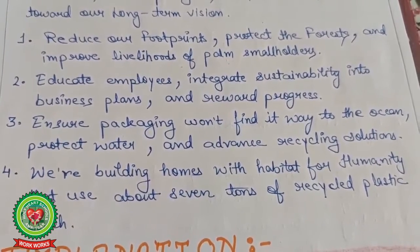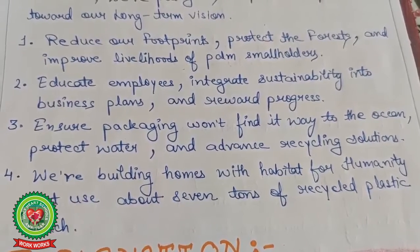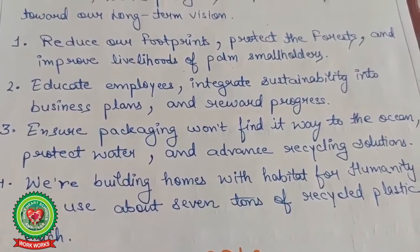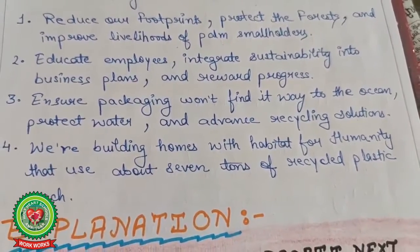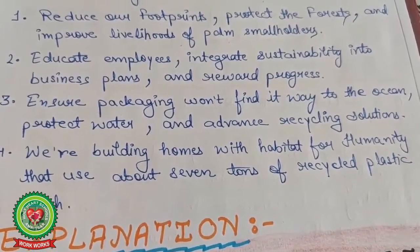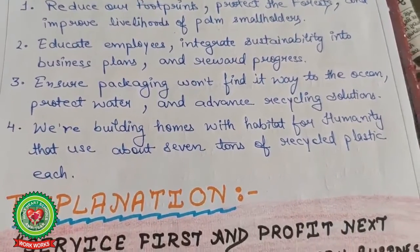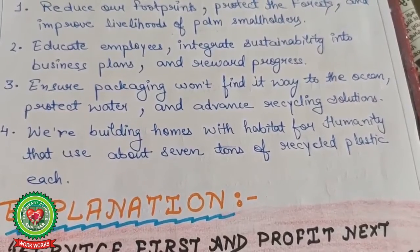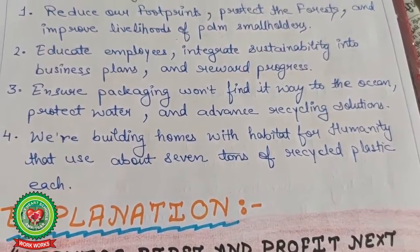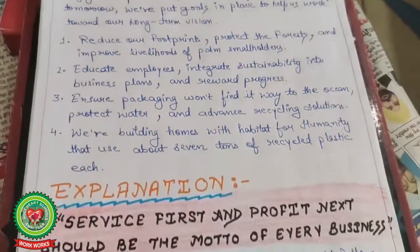Second, educate employees, integrate sustainability in business plans and rewards — to protect, educate, and provide rewards to employees. Third, ensure packaging won't find its way to the oceans — meaning proper disposal of waste materials and recycling. Fourth, building homes with Habitat for Humanity using about seven tons of recycled plastic each. Those are the corporate social responsibilities of P&G.